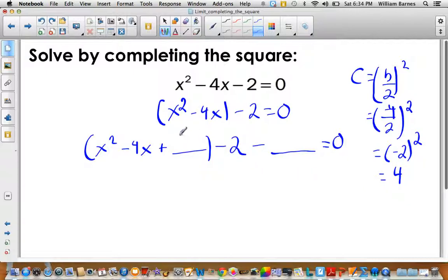What I'll put here is plus 4. And now what I'll put here is subtract 4, to keep the equality. What I need to remember is that if I'm adding something in here, in order to keep the equality of the situation, I need to make sure that I subtract off that same thing over here, and that's equal to 0.